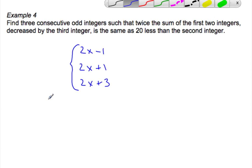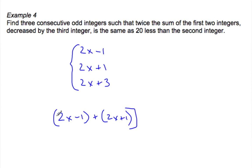We can make some equations now. Twice the sum of the first two integers: so 2 times, 2X minus 1 plus 2X plus 1. That's the sum of the first two integers. Twice that sum, decreased by the third integer which is 2X plus 3, in parentheses because it's the whole integer being subtracted. Is the same, equals 20 less than the second integer. So the second integer, I'm going to have 20 less than that, so 2X plus 1 minus 20.